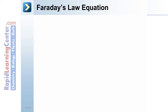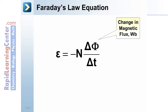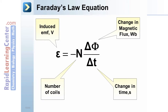Faraday's Law equation. The previous observations can be summarized into the following formula: epsilon equals negative n times the change in flux over the change in time. Here, flux, or phi, is in Webers. Change in time is in seconds. N is the number of coils. And epsilon is the induced EMF, which is in volts.